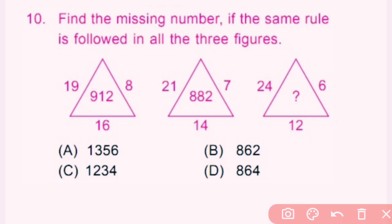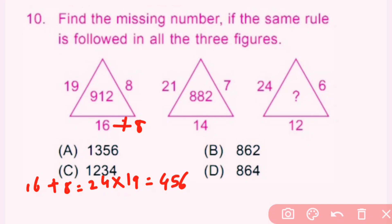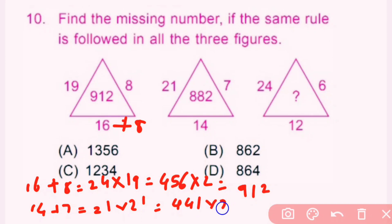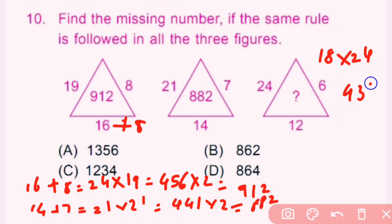Question number 10: Find the missing number if the same rule is followed in all three figures. Rule: (16+8)×19×2 — 16+8=24, 24×19=456, 456×2=912. Same rule: 14+7=21, 21×21=441, 441×2=882. For the third figure: 12+6=18, 18×24=432, 432×2=864. So the question mark is 864. D is the correct answer.